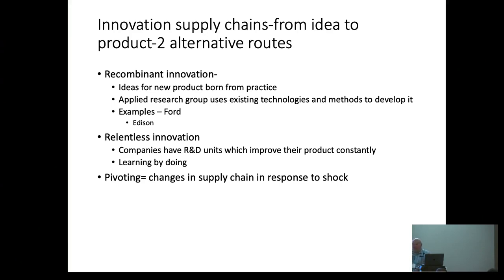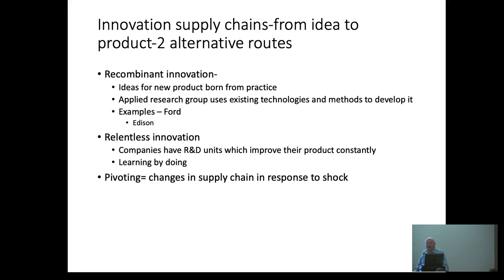You see what happens, for example, with the cell phone. When a company doesn't innovate all the time, they go out of business. So Motorola is out and Apple is in. And then there is something I call pivoting, where you have a supply chain and suddenly face an obstacle and move forward. That's what happened during the pandemic.